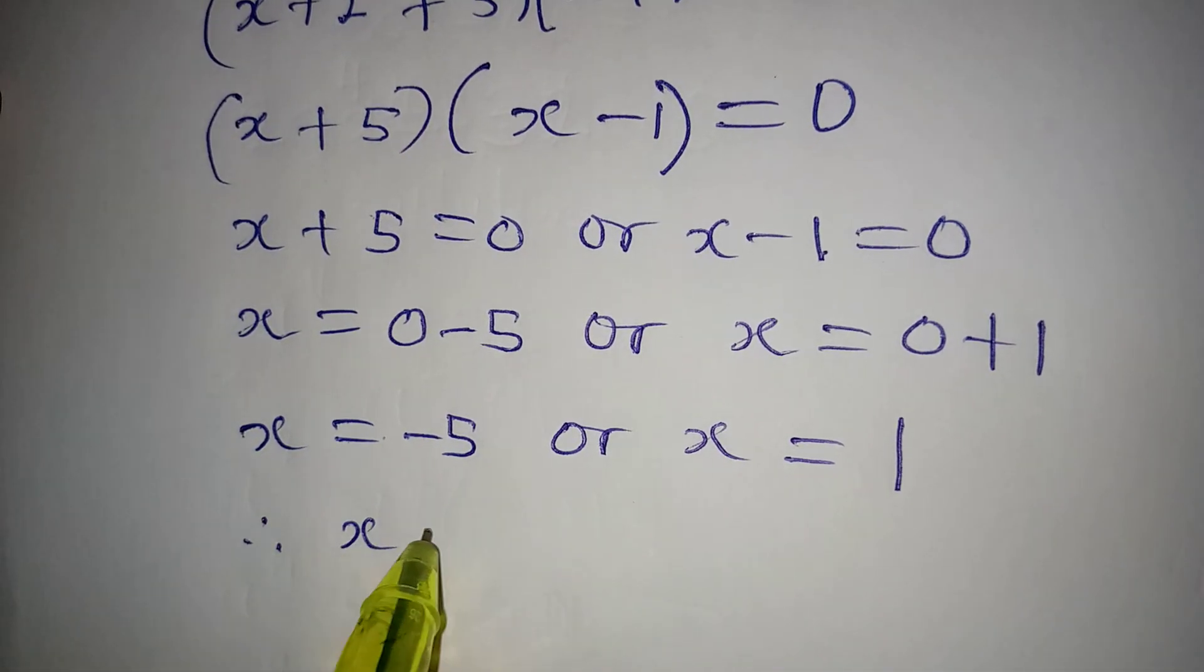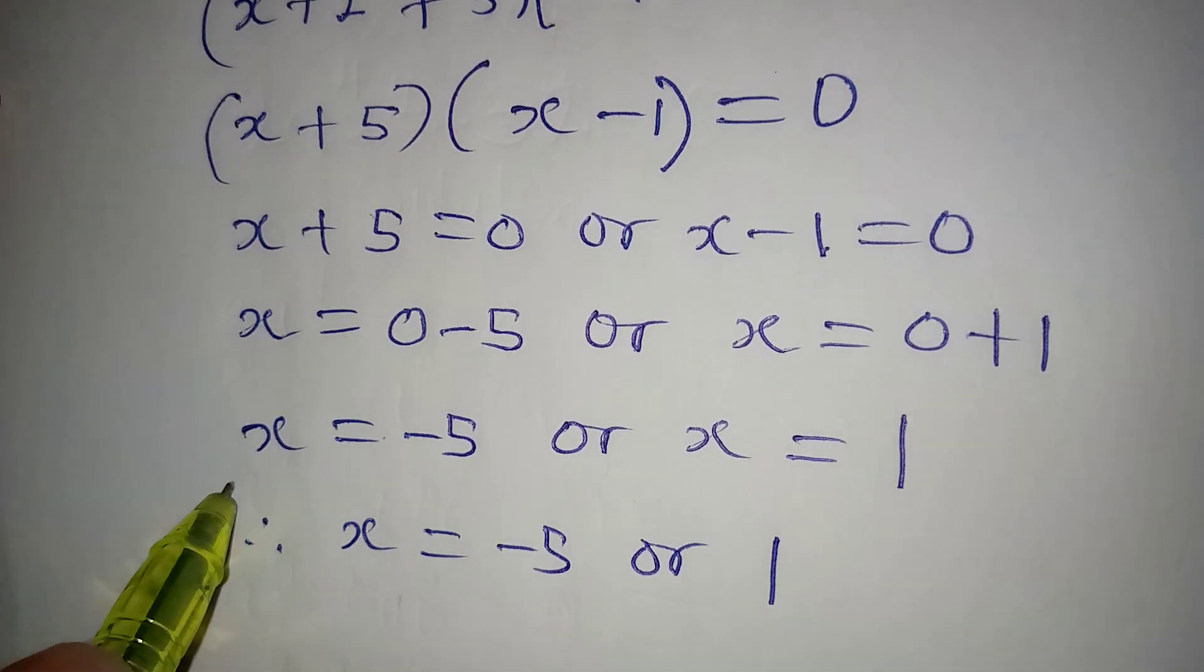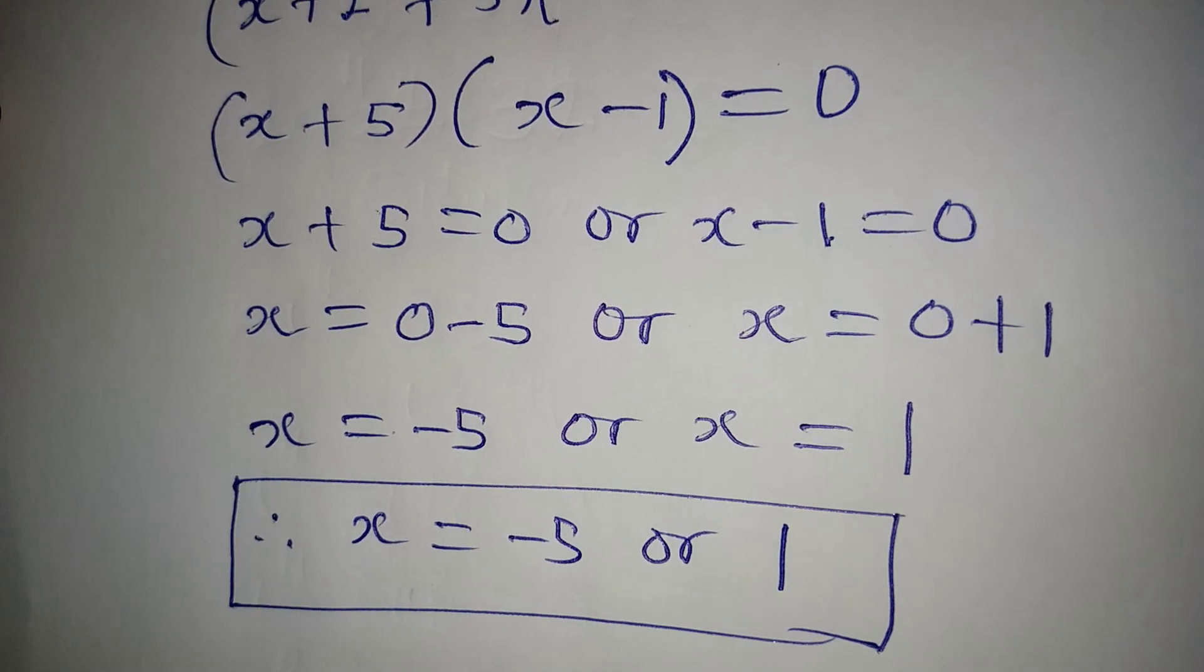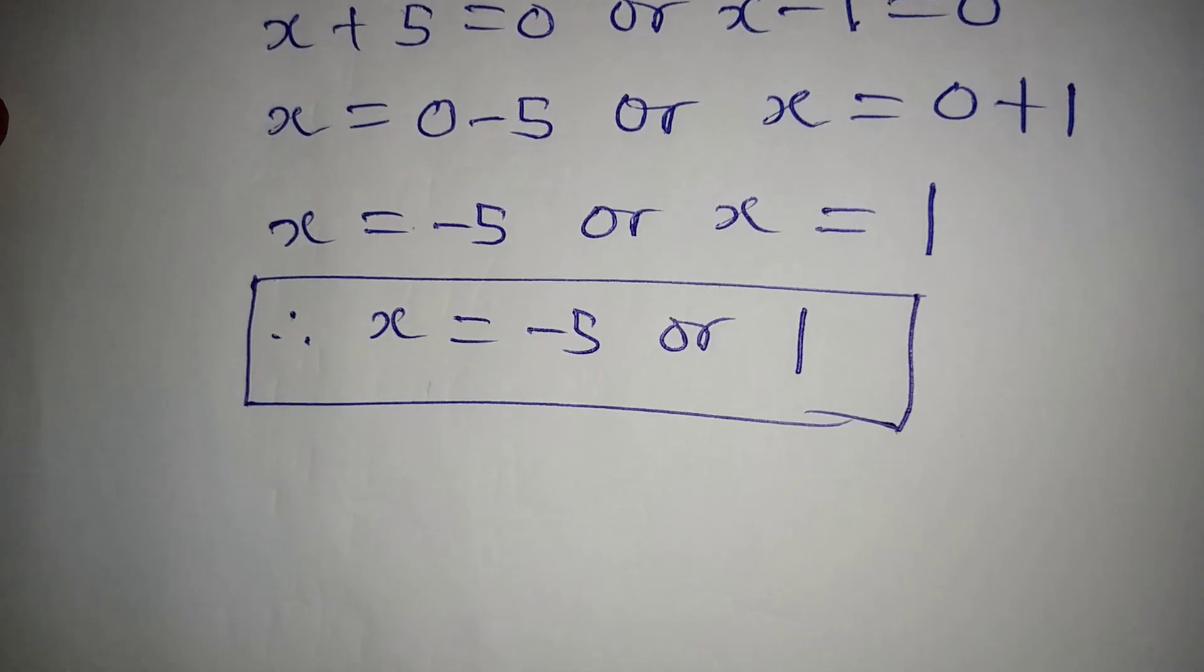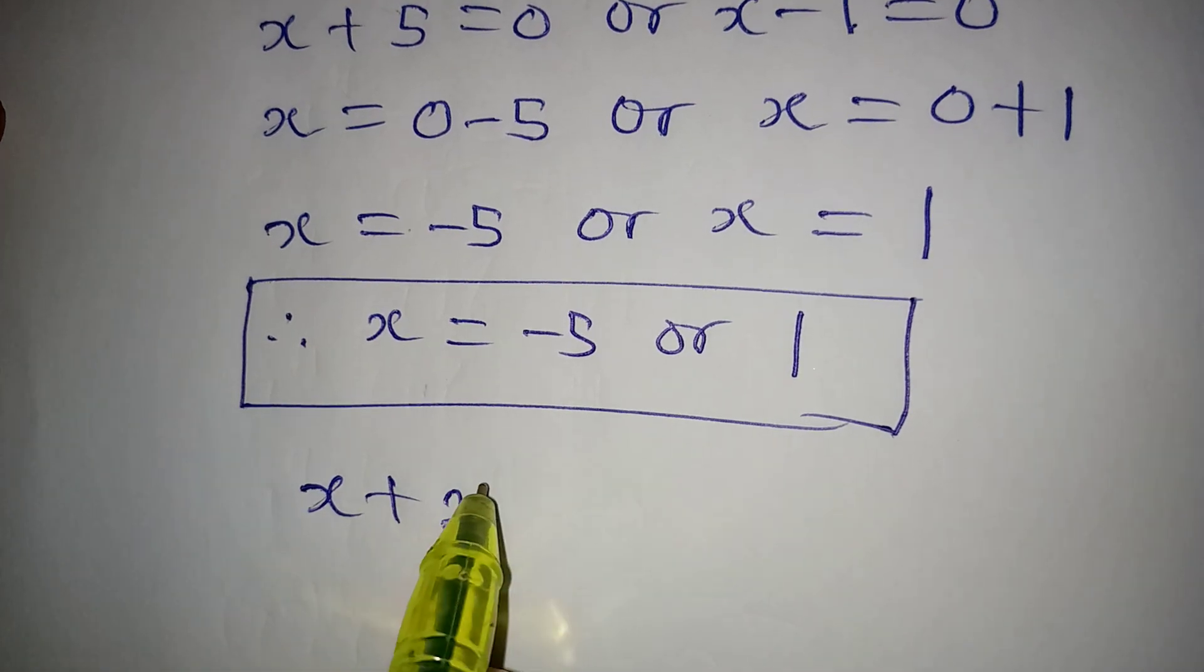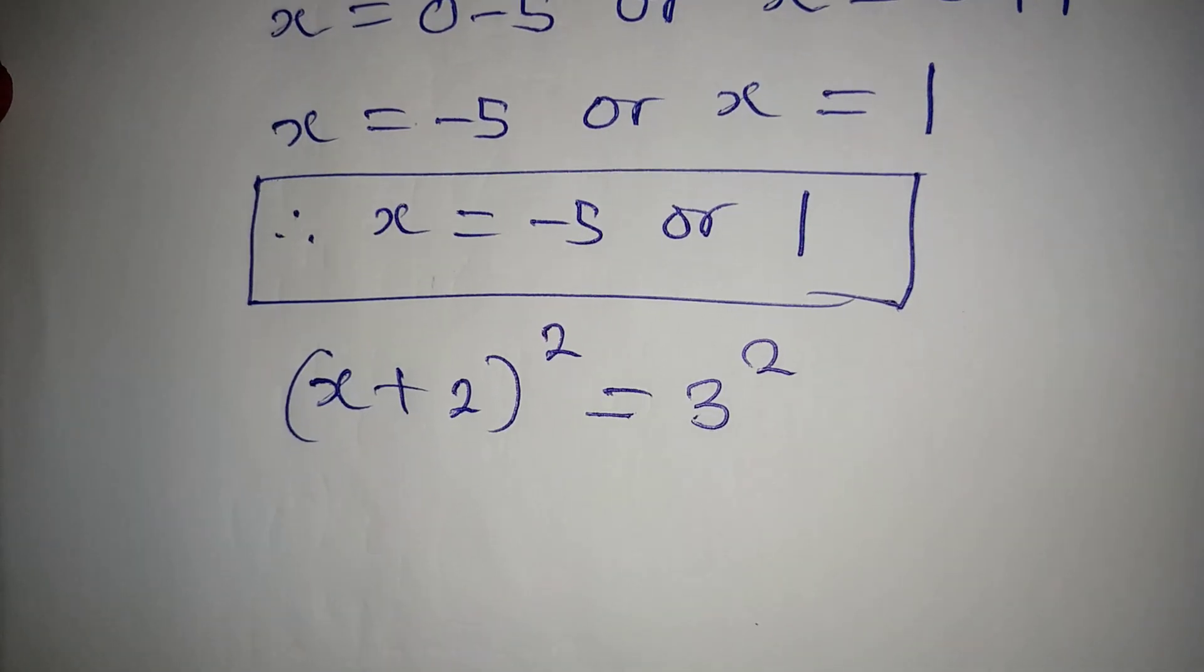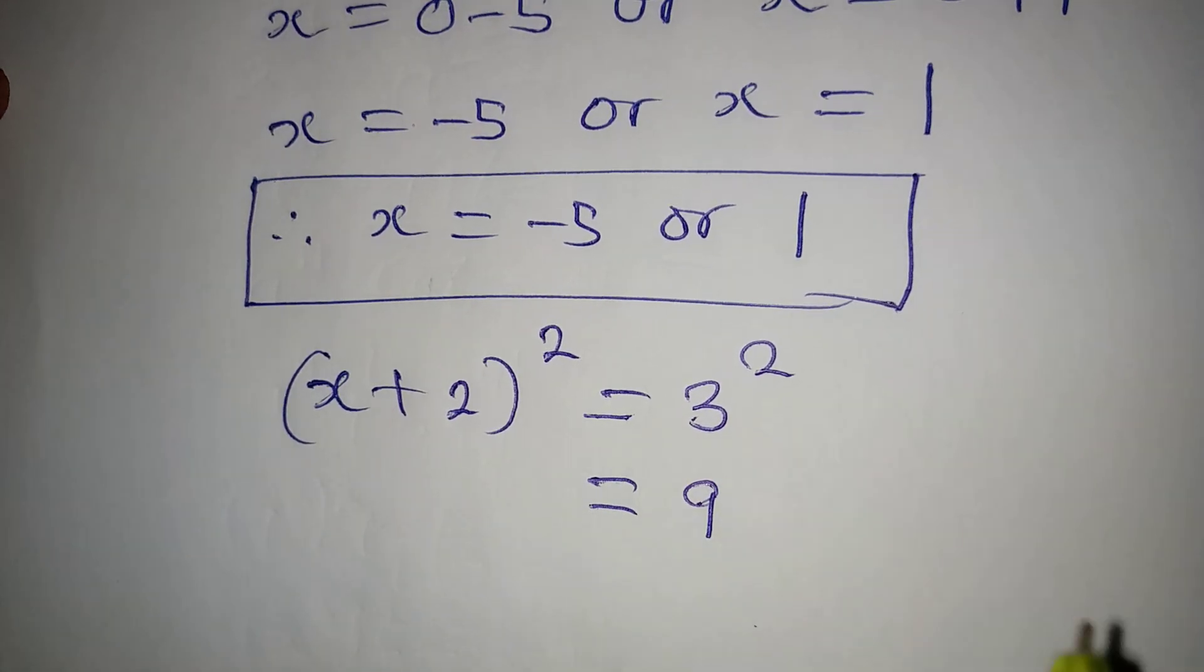Therefore, we have x to be minus 5 or 1. So these are the values of x or the possible values of x. Now let's put these two into the equation and check. We have x plus 2 to the power of 2 being equal to 3 to the power of 2. And remember that 3 to the power of 2 is 9, so that means we are having 9 on the right.